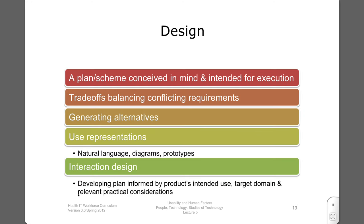All systems are conceived through a design process. Design is a plan or scheme conceived in mind and intended for execution, resulting in a particular product. Invariably, it involves a set of trade-offs, balancing conflicting requirements. For example, a given system might want to target high-performing experts in a particular domain, or alternatively might want to support relatively novice users — it's very hard to do both well. The design process involves generating alternatives and using various kinds of representations that lead to design concepts, expressed through natural language, mock-ups in the form of diagrams, and eventually prototypes.